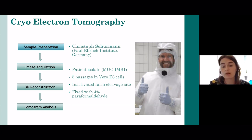We used five passages which left us with viruses that had inactivated furin cleavage site. To make sure the virus is no longer dangerous so we can work with it, we also fixed it with four percent paraformaldehyde. Once all of this was done, we prepared the sample for cryo-electron tomography. The most important step is freezing at rapid speed that leaves the sample frozen at minus 180 degrees Celsius. Once we have such a sample, we can put it into the electron microscope.